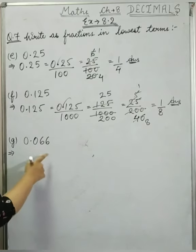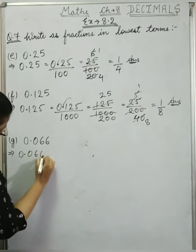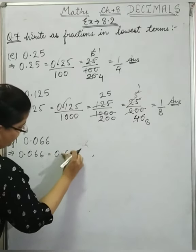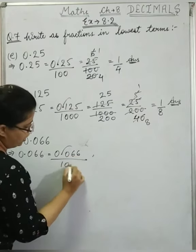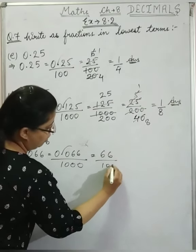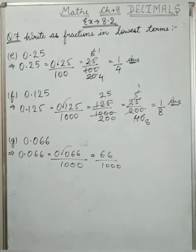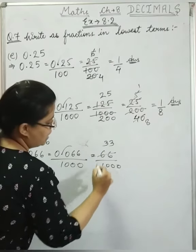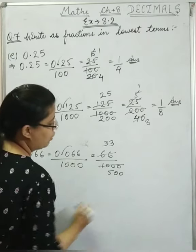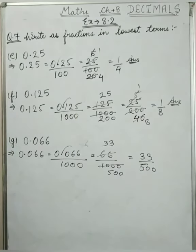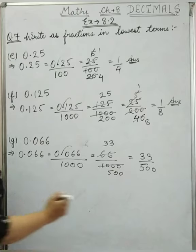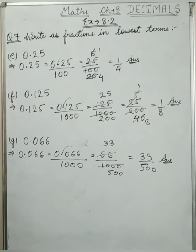Now next is g, the last part of this question: 0.066. We remove the decimal; after the decimal there are 3 digits, so 3 zeros in the denominator: 66 upon 1000. We reduce using the 2 times table: 2 times 33 is 66, and 2 times 500 is 1000, giving 33 upon 500. Since 33 and 500 have no common factor, 33 upon 500 is the final answer. I hope this question is clear to you, and exercise 8.2 is now completed. Thank you.